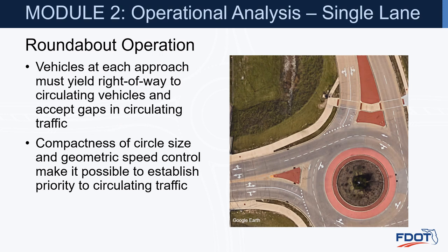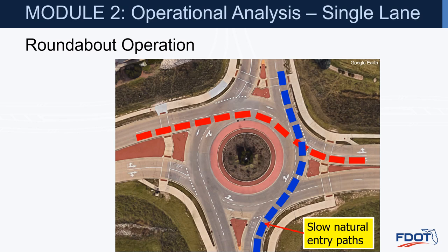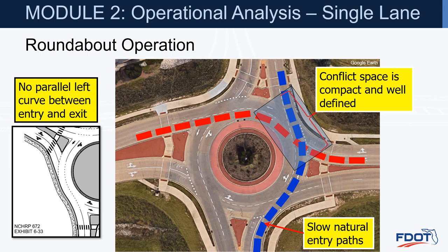Vehicles at each approach must yield right-of-way to circulating vehicles and accept gaps in circulating traffic. Compactness of circle size and geometric speed control make it possible to establish priority to circulating traffic. The red car yields to the circulating blue car and enters when there is an acceptable gap. Vehicles entering the roundabout should follow a slow, natural path. The conflict space where vehicles cross paths should be compact and well-defined, and roundabouts should not include a parallel left curved section within the roundabout between the entry and exit.